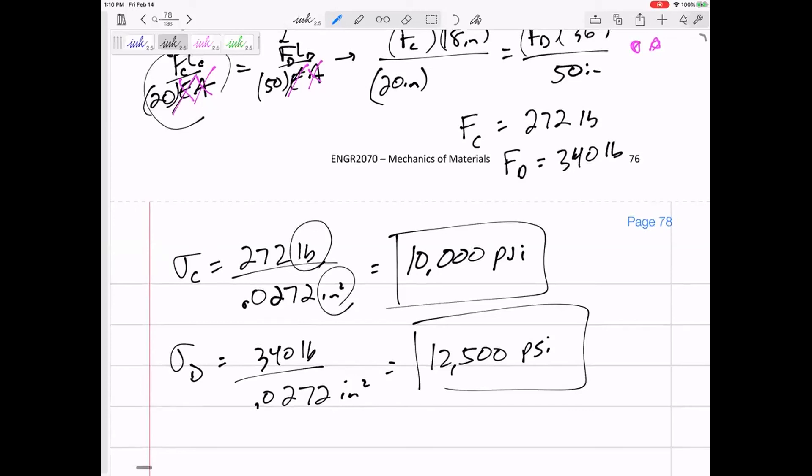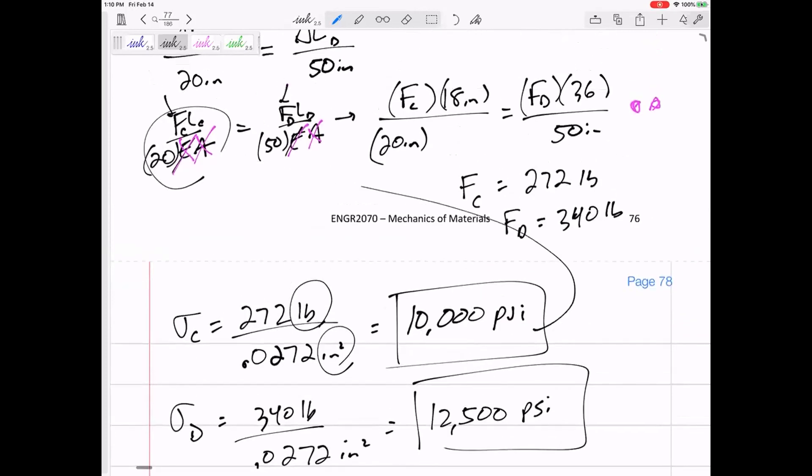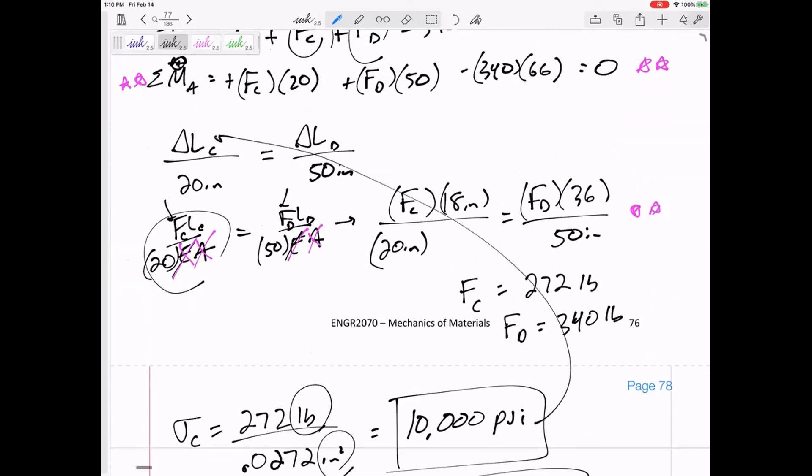Sometimes it might ask you, what is the delta L of cable C? So I would come back here, plug in that force, plug in that length over EA. I would find FL over EA of C. Now that you know the F, you can find it.